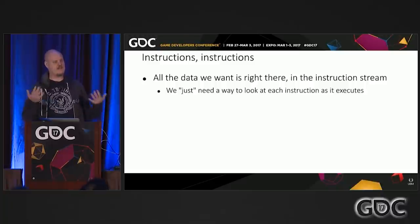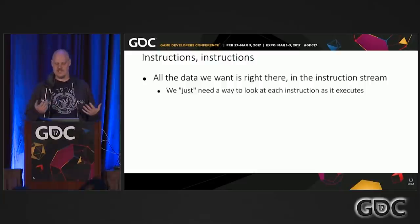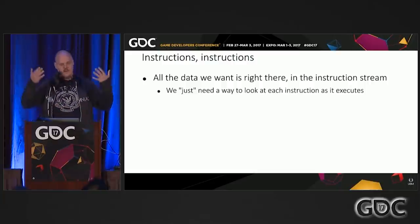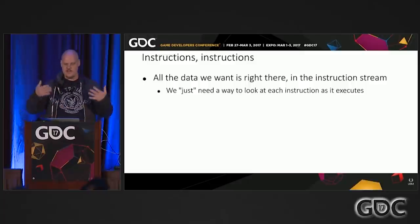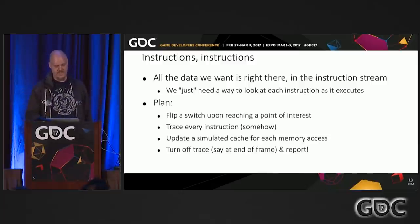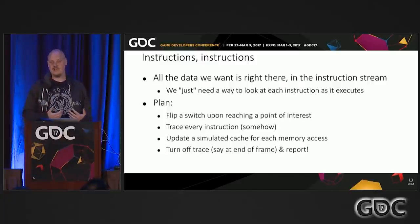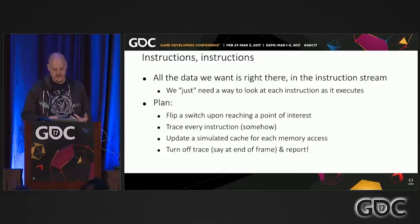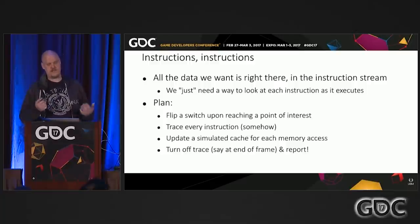To simulate what's going on in a program, it seems easy if we could just be superhuman, because it's all there in the instruction stream. All we have to do is look at what the instructions are doing, look at the addresses and operands, and count if things were cached or not. We'd basically flip a switch when we've gotten at full speed to some point of interest, then start single-stepping instructions, update some cache simulation, then turn off the trace and report, and live happily ever after. How do you even do this?